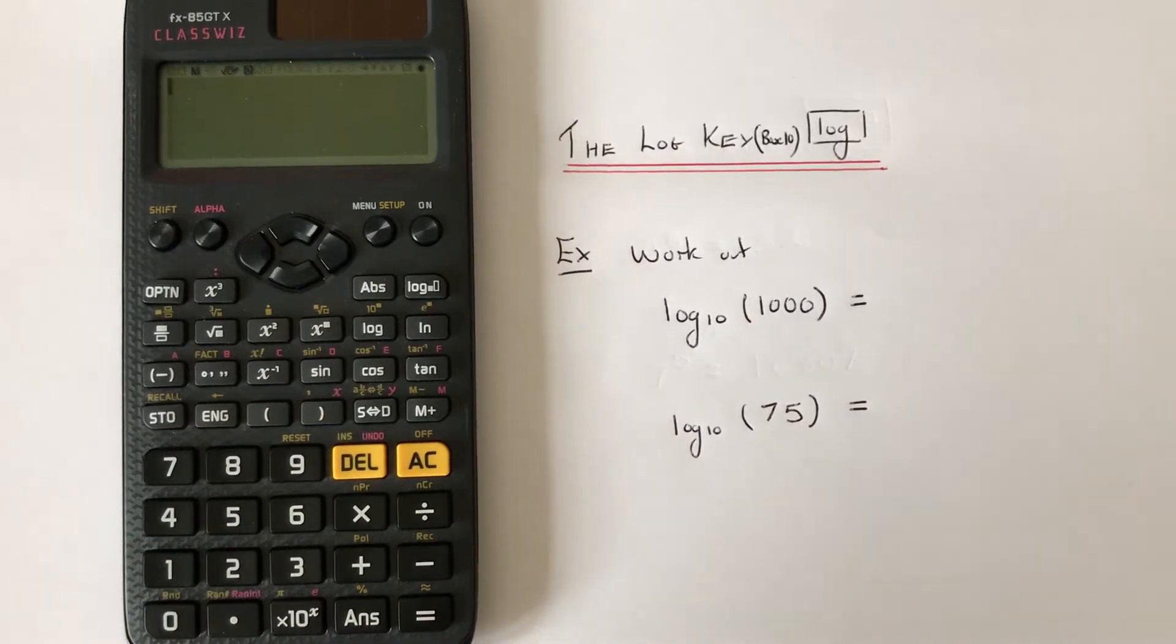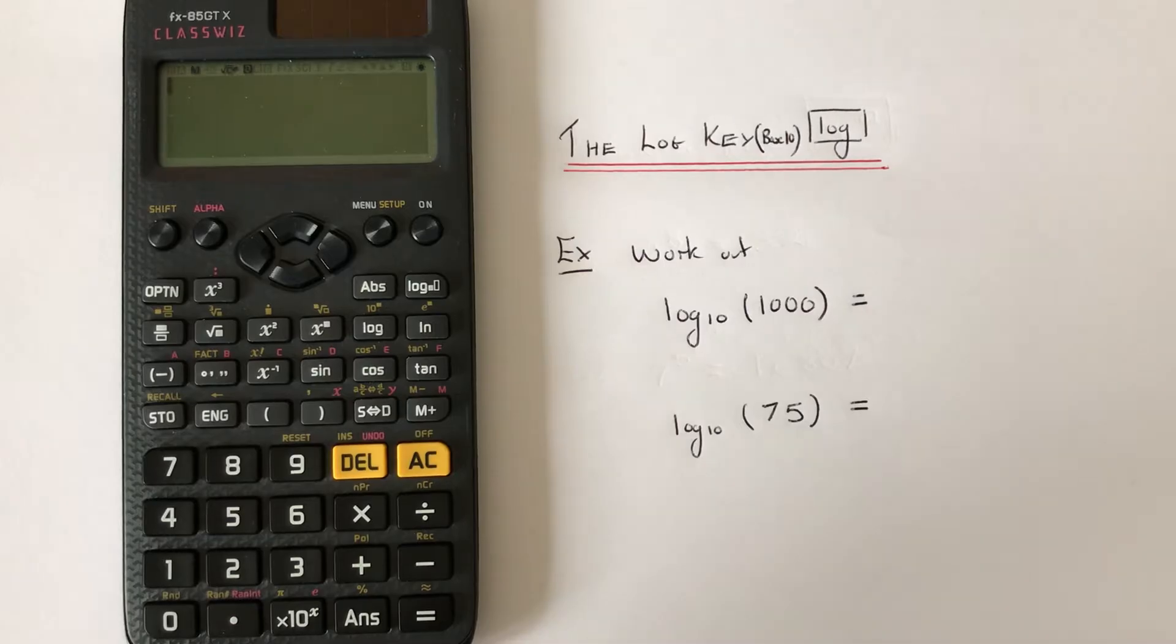Hi guys, welcome back. This is Maths 3000. Today I'm going to use a Casio Classwiz scientific calculator to work out log base 10 of a number. To do this we need to use the log base 10 key.